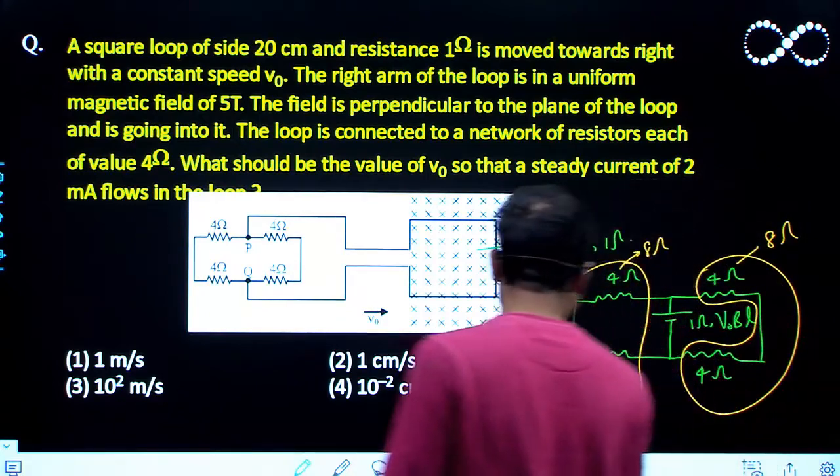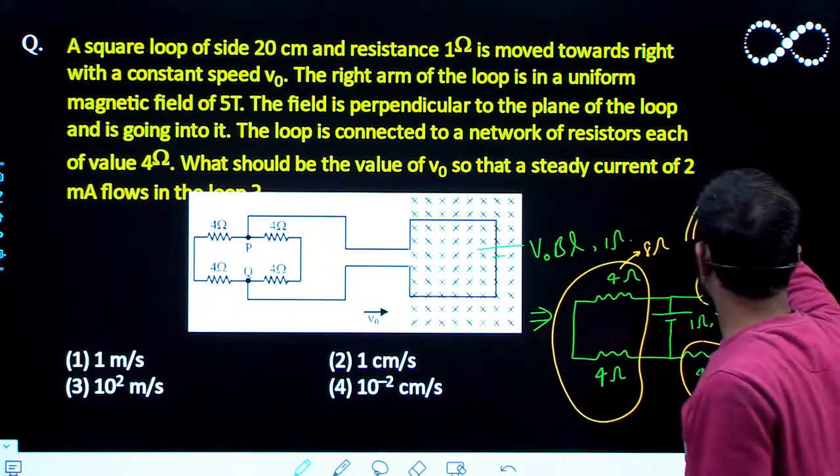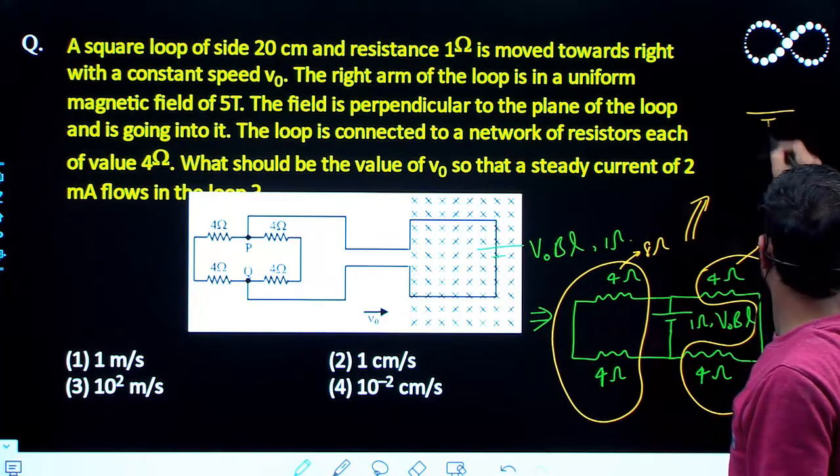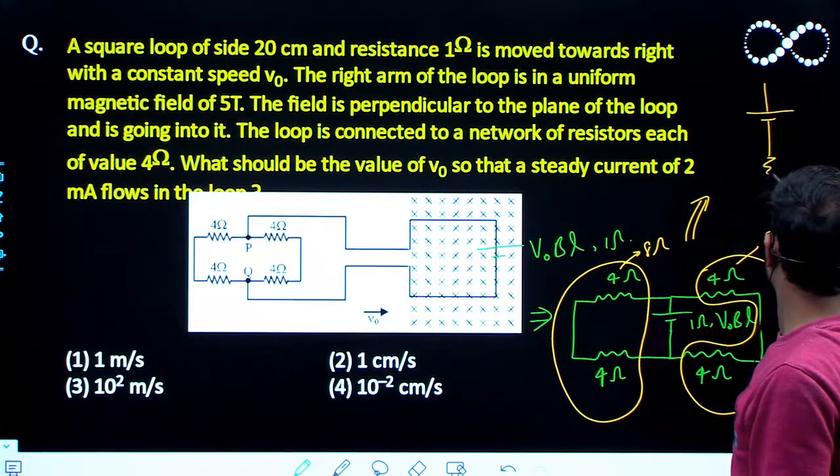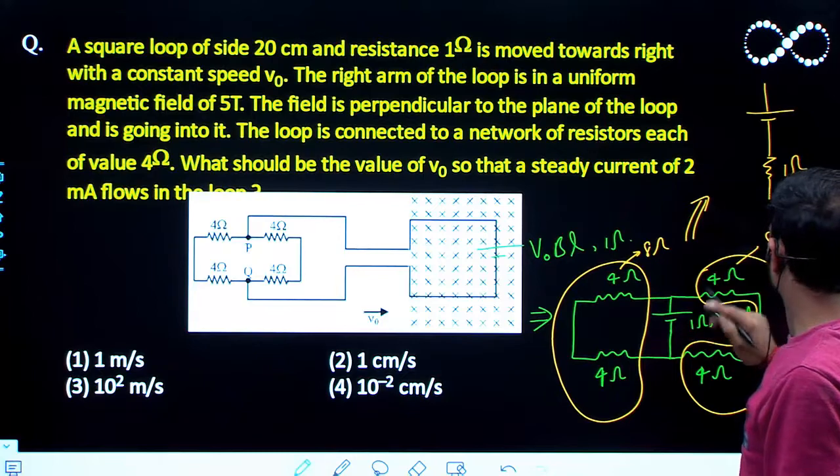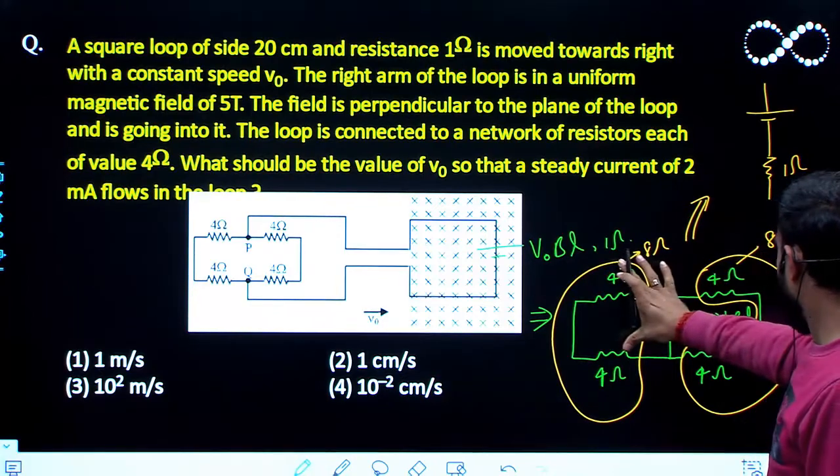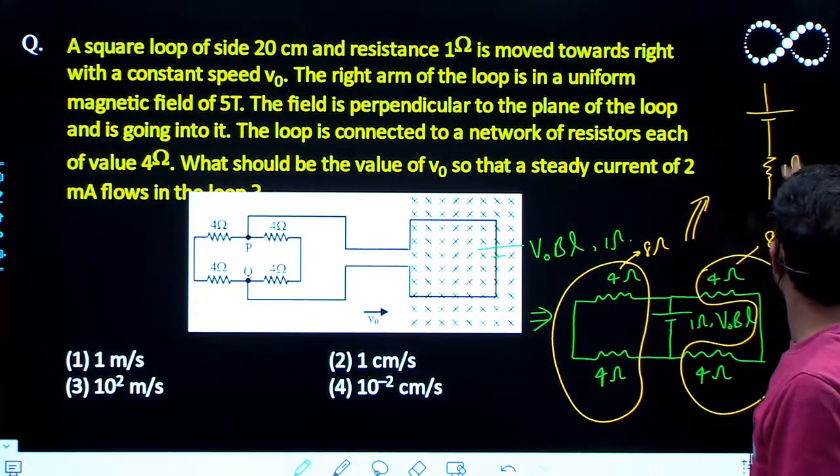If I further redraw this circuit, then you will get something like this. This is your cell here having the internal resistance as 1 ohm. And this 8 ohm and this 8 ohm are in parallel and so this equivalent will become 4 ohm.